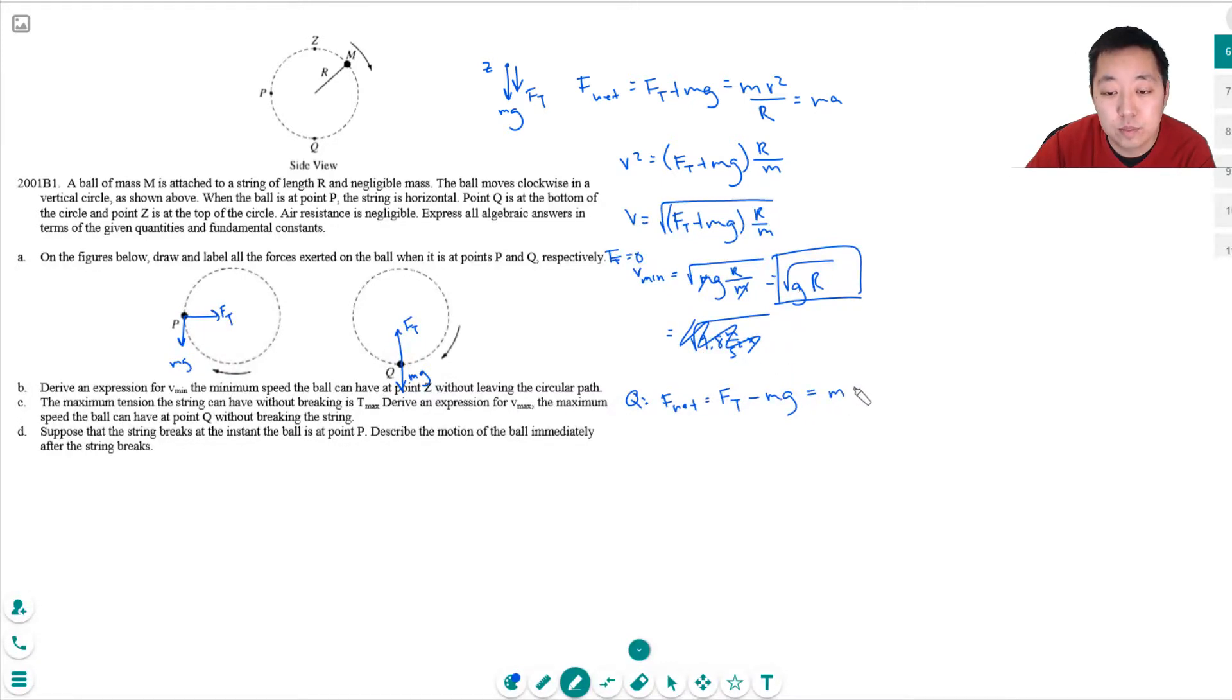And that's equal to M V squared over R. It's equal to M, you know, net force equals MA, but A is V squared over R. That's really the only difference in circular motion.